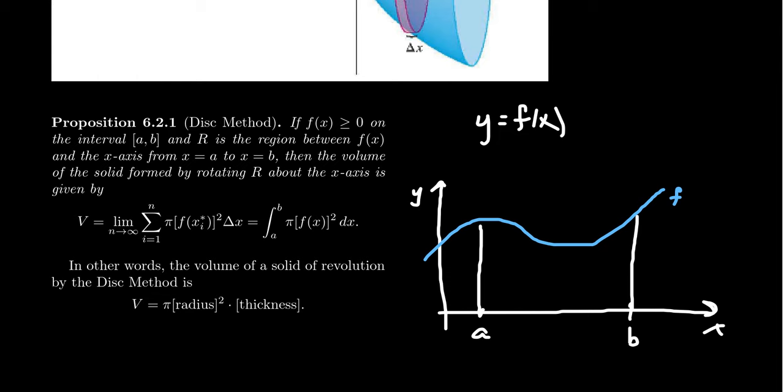We've seen how to use integrals to find the area of such a region. Now what we want to do is suppose that this region is rotated around the x-axis. What type of object would we get in three dimensions? This so-called solid of revolution. It turns out we can use integration to find the volume of this solid of revolution, and the way that we approach it is going to be very similar to how we found area.